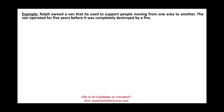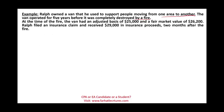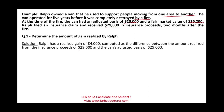Rolf owned a van that he used to help people moving from one area to another. The van operated for five years before it was completely destroyed by a fire that Rolf had nothing to do with — involuntary. At the time of the fire, the van had an adjusted basis of $25,000 and a fair value of $26,200. Rolf filed an insurance claim and received $29,000 two months after the fire. The amount realized is $29,000 minus the adjusted basis of $25,000, giving a realized gain of $4,000.